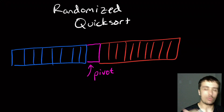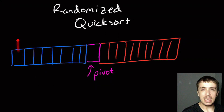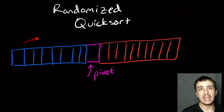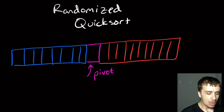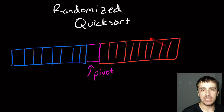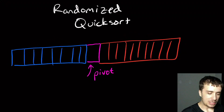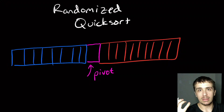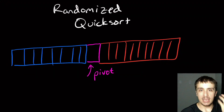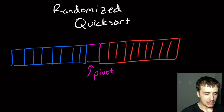The problem with the original method is that if we always pick, say, the first or last element, we could choose a really bad pivot — one where nothing is on its left side and everything else is on its right side, so we only place one element correctly. With a lucky pivot choice we'd have roughly half the elements on each side, and with a random pivot we have, on average, half on each side. But we could still make bad choices randomly every time.